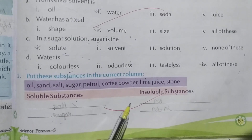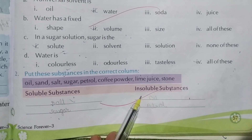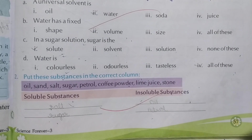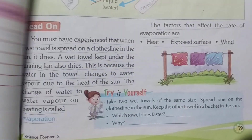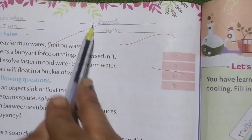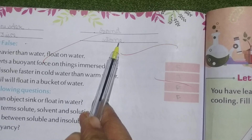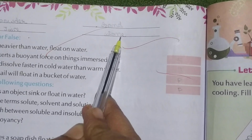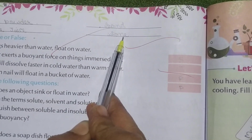Now write insoluble substances: oil, petrol, sand, stone.